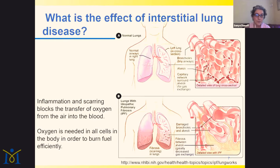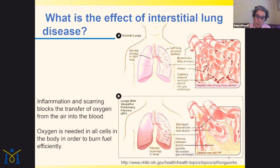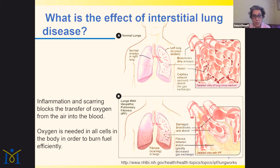When somebody develops interstitial lung disease, the blood vessels are normally all around and very close to the air spaces. When there's inflammation or fibrosis, the space between the blood vessels and the air spaces becomes enlarged, filled with either immune cells or collagen — which makes up the fibrosis or scarring. When that happens, the process of transferring oxygen from inside the air space to the blood vessel and out to your tissue becomes damaged or less efficient. It's harder to get oxygen from the air you're breathing in.